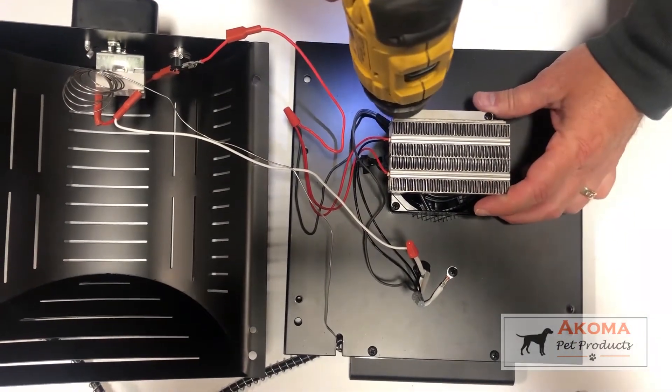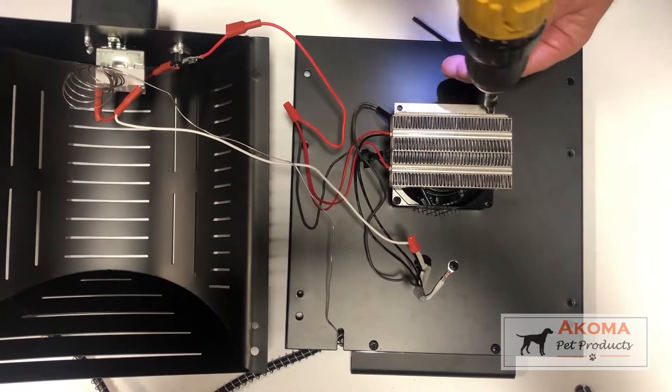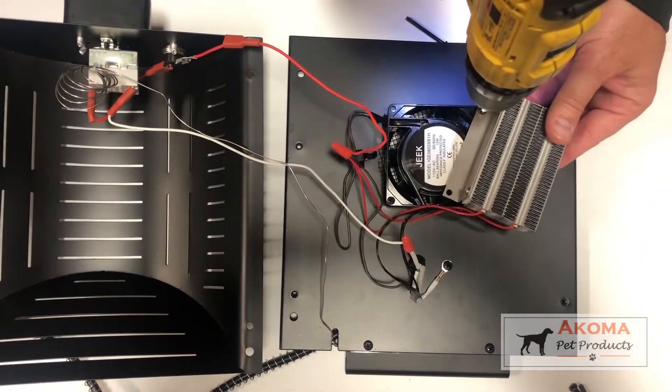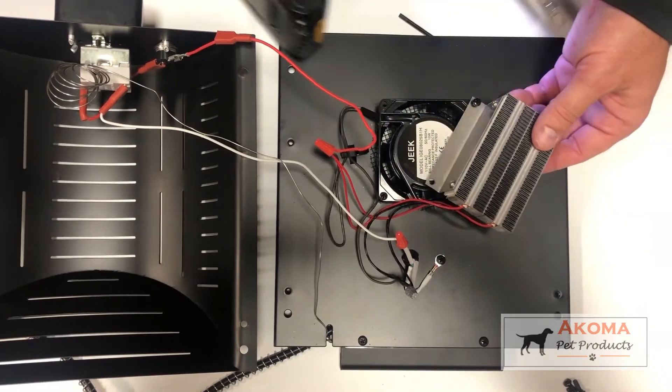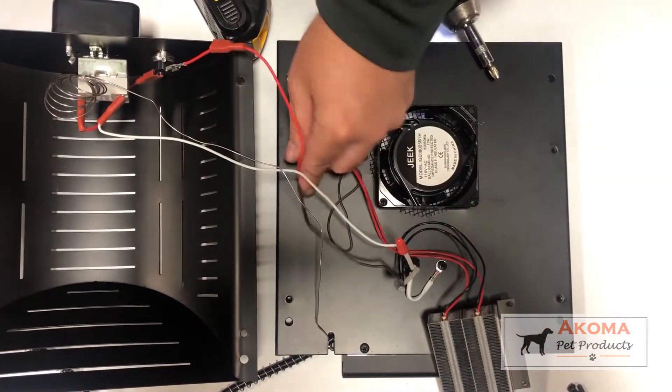They're longer screws. You just take them out. And you can see the heating element can be moved out of the way. It's still attached. It's fine.